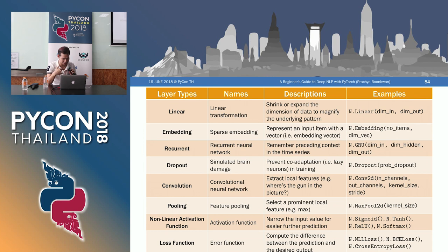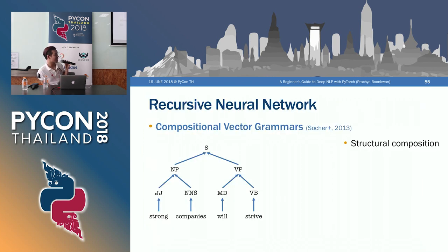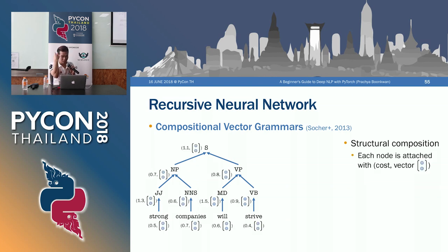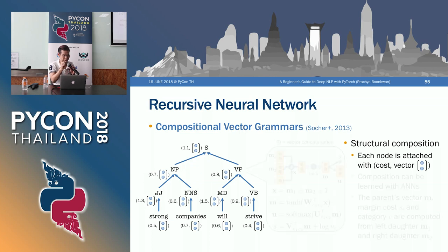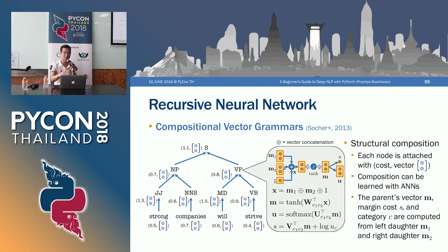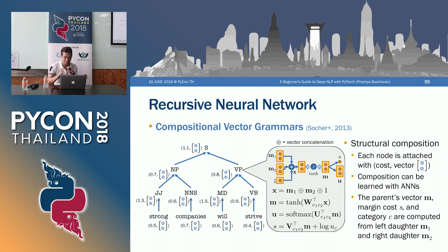The last building block is recursive neural networks — dynamic networks based on a tree structure. For each node, you have a constituency cost and an embedded vector, and you compute the parent node's vector from the child nodes. This cannot be implemented in Keras — you need TensorFlow or PyTorch. With PyTorch, it's really easy — just four lines of code.